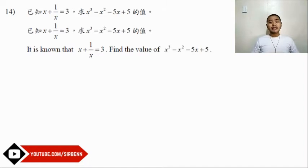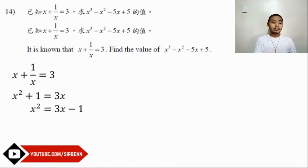For the solution, given that x + 1/x = 3, I'm going to multiply both sides by x. This gives us x² + 1 = 3x. Next, I'll add negative 1 to both sides of the equation so that we have x² = 3x - 1. This will be our first equation.